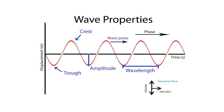Let's take a look at a picture of a wave. A wave pulse is a single bump or disturbance that travels through a medium. The crest is each high point, and the trough is each low point. The amplitude of the motion is the maximum distance that the object moves from equilibrium.